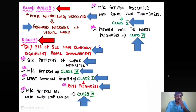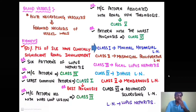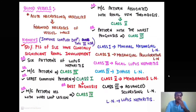The six classes are: class 1 — minimal mesangial lupus nephritis; class 2 — mesangial proliferative lupus nephritis; class 3 — focal lupus nephritis; class 4 — diffuse lupus nephritis; class 5 — membranous lupus nephritis; and class 6 — advanced sclerosing lupus nephritis. The damage to the kidney is due to immune complex deposition, and therefore it is a type 3 hypersensitivity reaction.